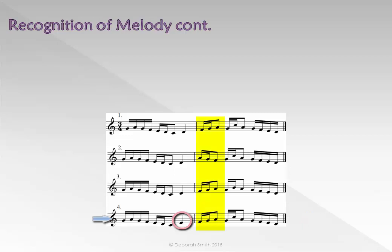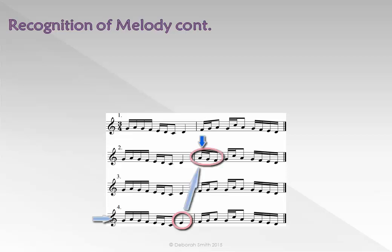Have a look at the start of the second bar. Parts 1 and 3 all begin on F, or Fa. However, example 2 begins on La, or A. If you hear this La descending to So and Fa, then you know it must be 2. If you don't hear that, but rather you hear Fa going up to So, going up to La, then you know it must be 1 or 3.